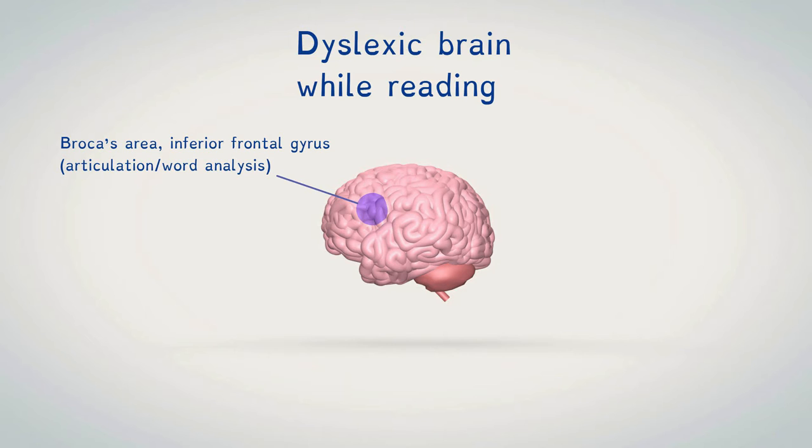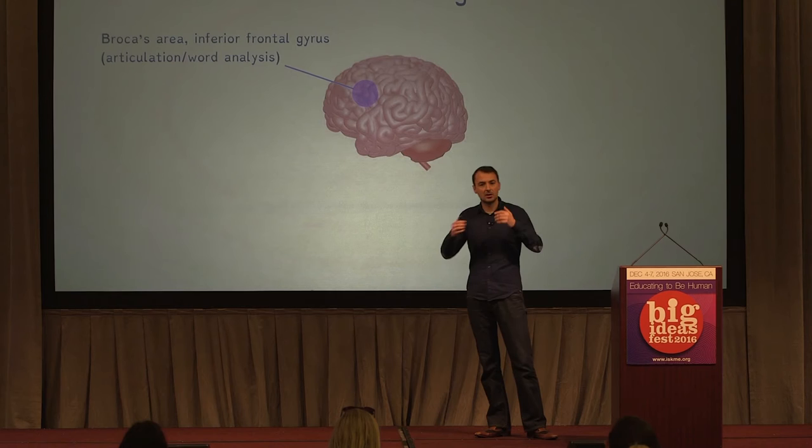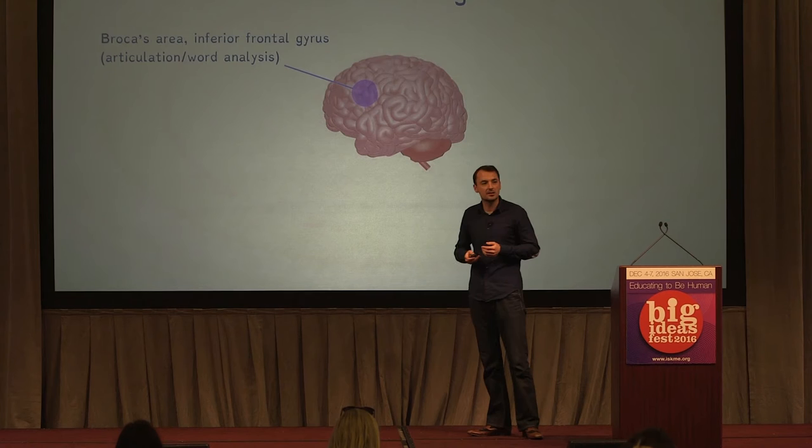With dyslectics, the other regions are not active at all. And the vision area, the Broca area, is highly active. We try to see the characters and try to make an image and understand and put sound to it. And this will take five times more energy for people with dyslexia to read.